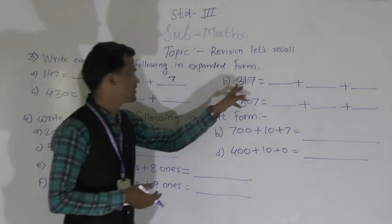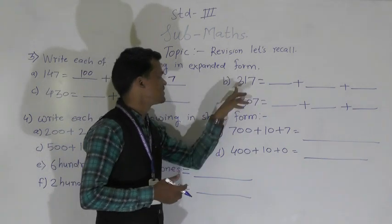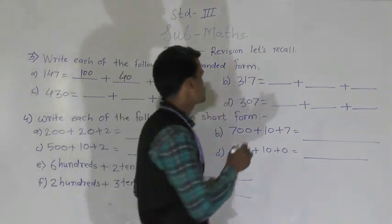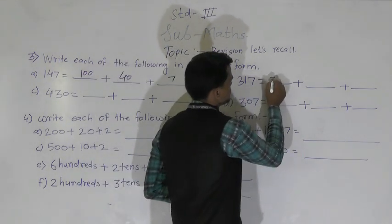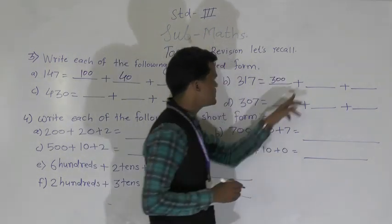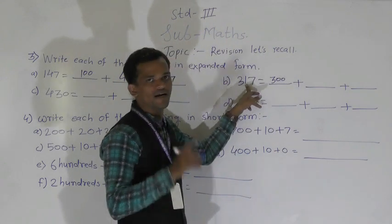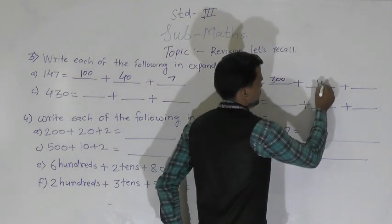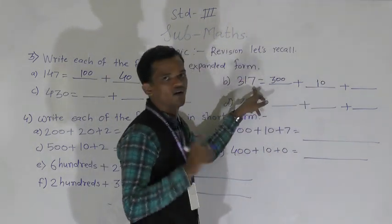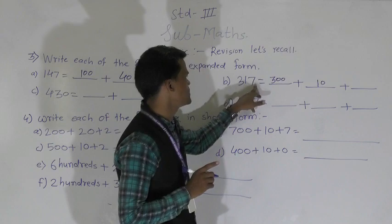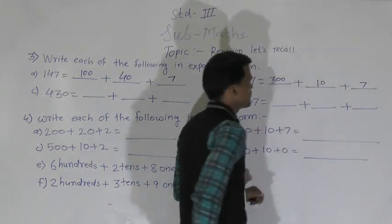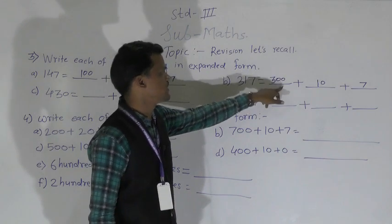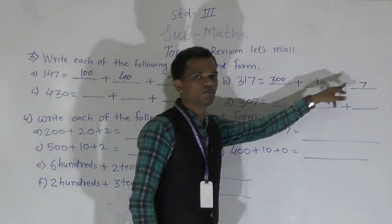These are very simple concepts. Next number is 317. 3 comes at the hundreds place so its place value is 300. 1 comes at the tens place so its place value is 10. And 7 comes at the ones place so its place value is 7. So 317 = 300 + 10 + 7.